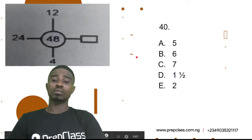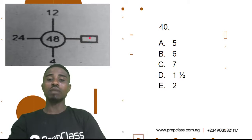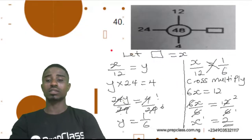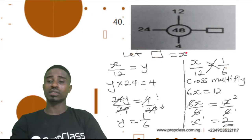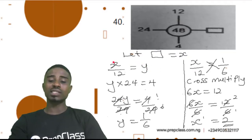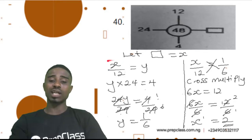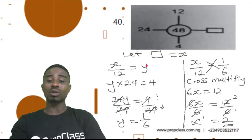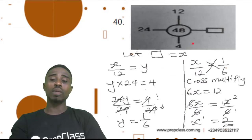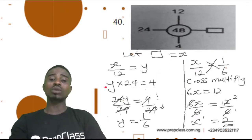Question 40. We have been asked to fill this empty box. We are going to say: let this box be equal to x. And we know x over 12 will give us an answer which we don't know, equal to y. That is why we replace them with alphabets, which we call variables in mathematics, because they are not constant — they vary. So, x over 12 gives us y. We also know that y times 24 gives us 4. y times 24 is the same as 24y, so 24y equals 4.